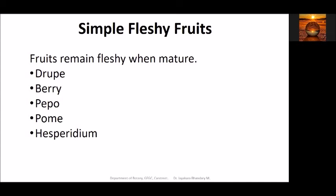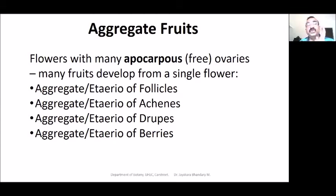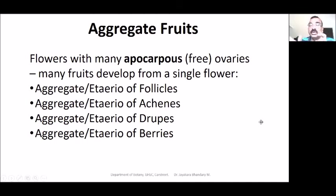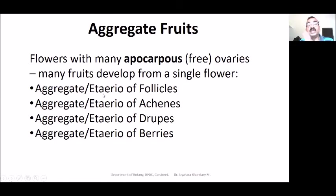Coming to aggregate fruits: a bunch of fruits are formed — many fruits develop from a single flower where all the carpels are free (apocarpous condition). That is called aggregate fruit. It could be an aggregate of follicles, aggregate of achenes, aggregate of drupes, or aggregate of berries. Each unit is called a follicle, achene, drupe, or berry. Examples will be studied later.